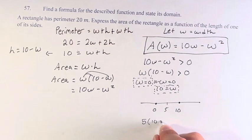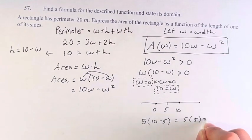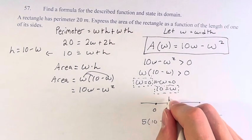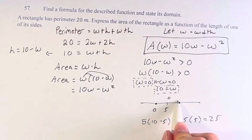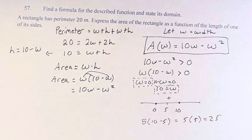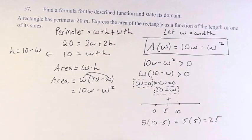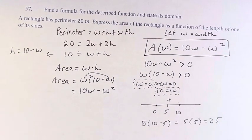5 times 10 minus 5 is equal to 5 times 5, which is 25, which is greater than zero. So in between zero and 10 is positive no matter what point you pick. That's what we know because we found the zeros.